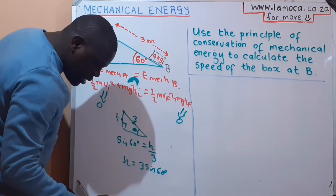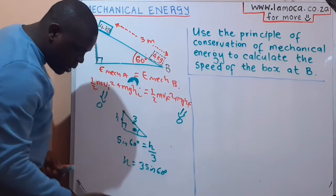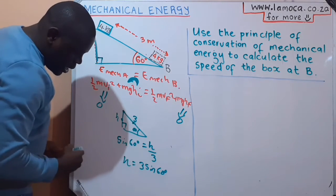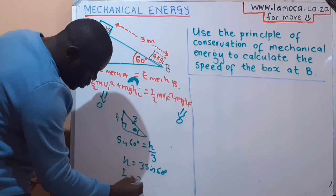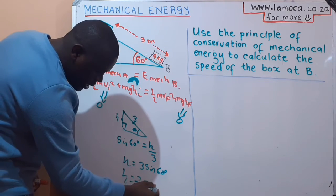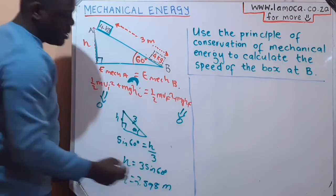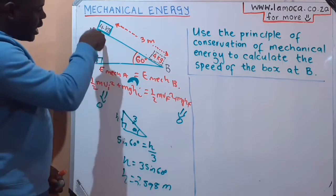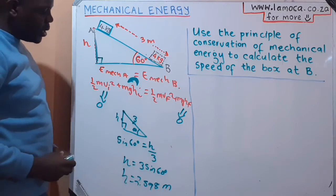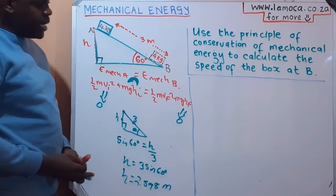We type that in our calculator. 3 sin(60°) is going to be equal to a height of 2.598 meters. So now we've got our initial height. We can apply that and put it in our conservation of mechanical energy.